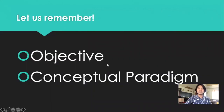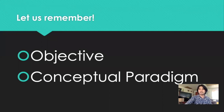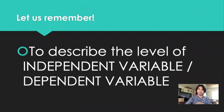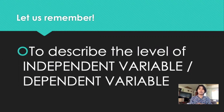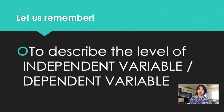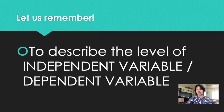Let us remember the objective and conceptual paradigm of our research. Our first and second objective is to describe the level of the independent variable or our dependent variable. We will be using mean for objective one and objective two.